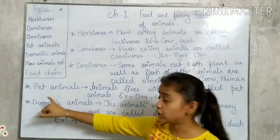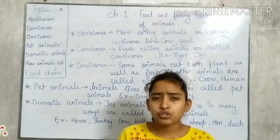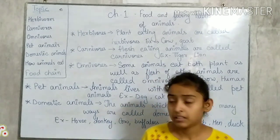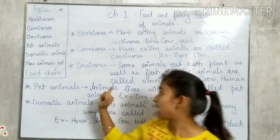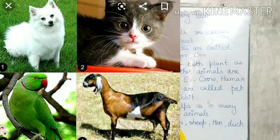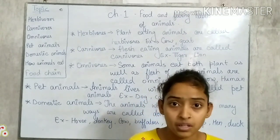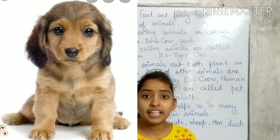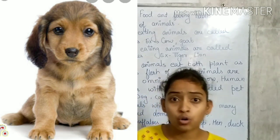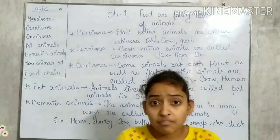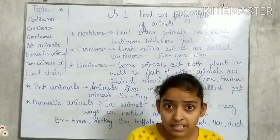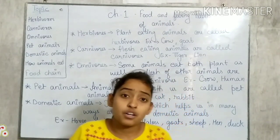Now another topic is Pet Animals. What do you mean by pet animals? Do you have any pet animals in your home? Animals that live with us are called pet animals. Those animals who live with us in our home always give us company — they are our best friends. Like dogs, which guard our home; cats, which also live with us; and rabbits. You all play with your pet animals. These animals are known as pet animals.